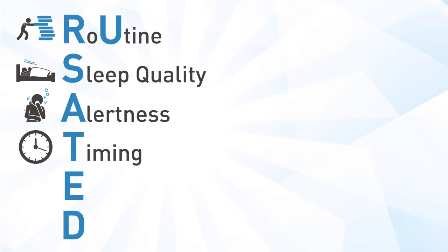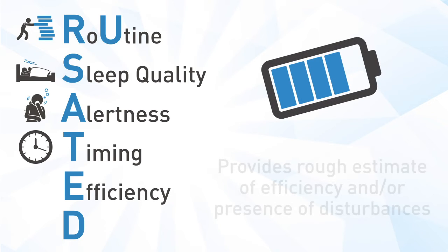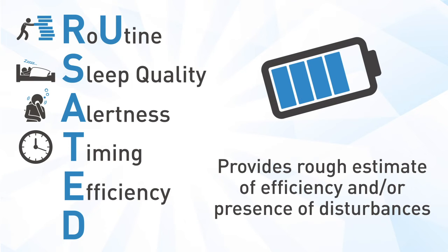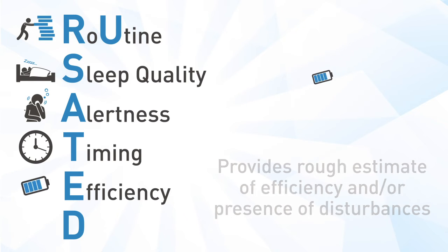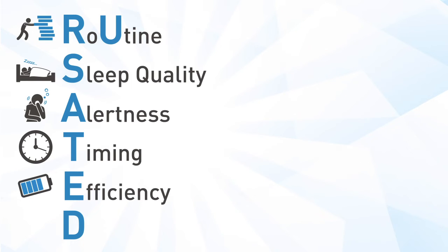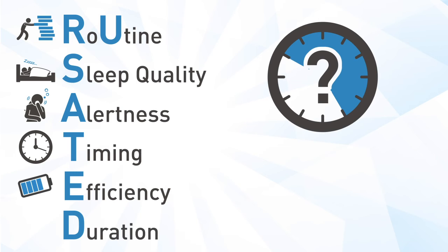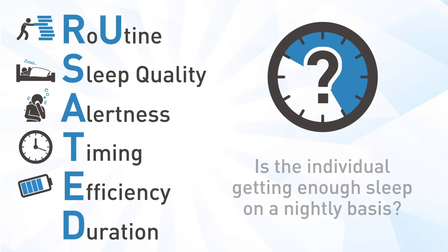E stands for efficiency — this provides a rough estimate of sleep efficiency and the presence of disturbances that may be resulting in insomnia. D stands for duration — the most obvious question relating to sleep, attempting to determine whether an individual is getting enough sleep on a nightly basis.